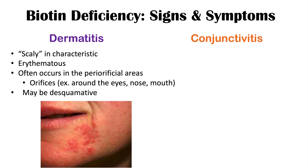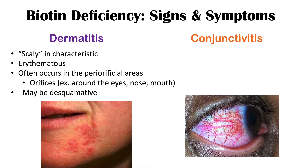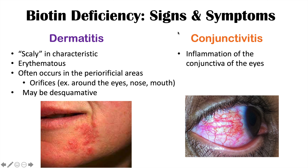Conjunctivitis can also occur in biotin deficiency. Conjunctivitis — with "itis" meaning inflammation — refers to inflammation of the conjunctiva of the eyes.